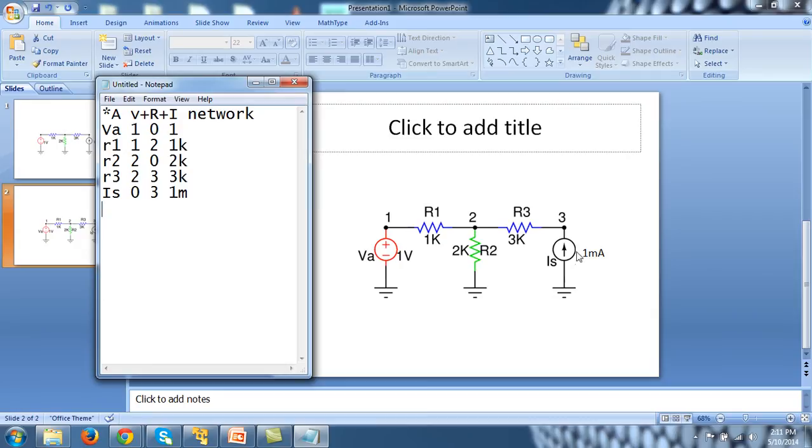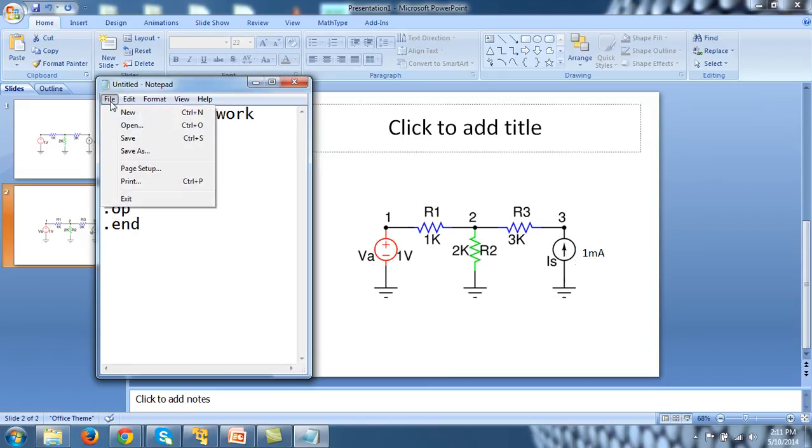And because this circuit contains only DC sources. For example, this is the DC source. And I want to know various node voltages and branch current. So, my command should be .op. And then finally .end.